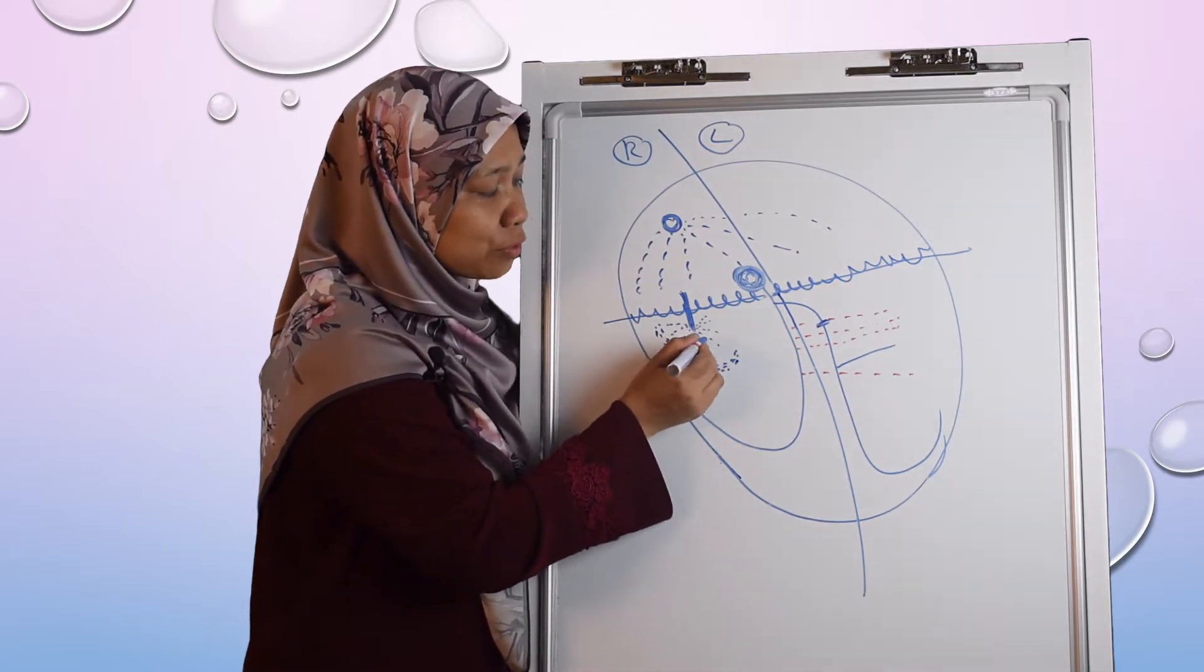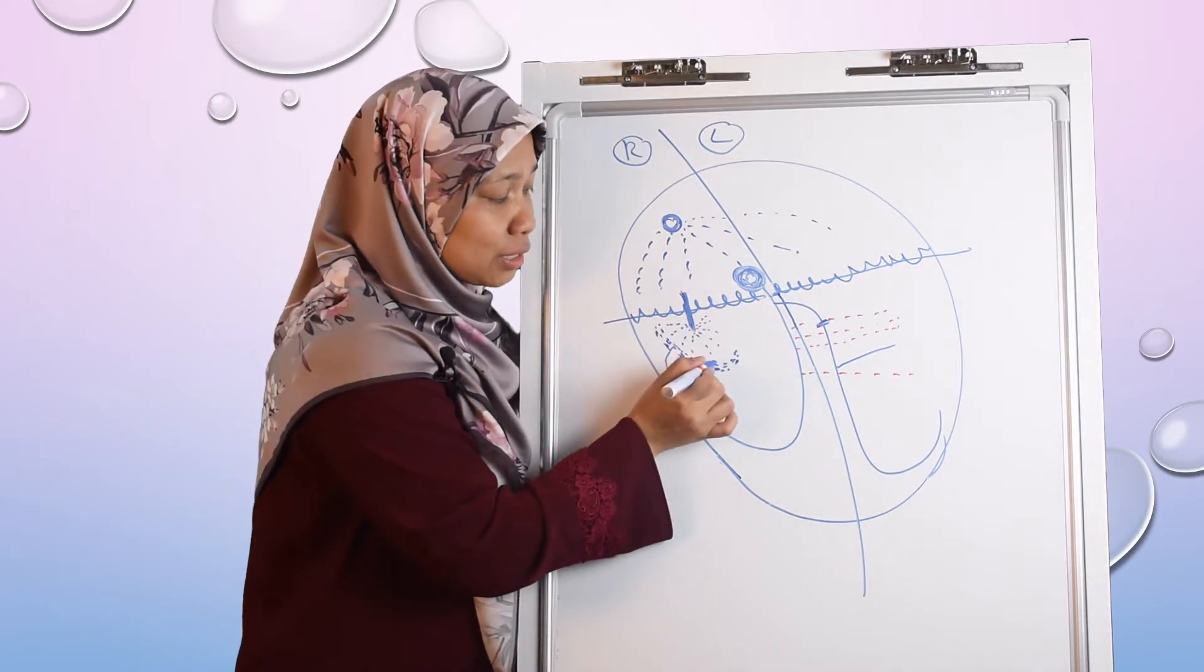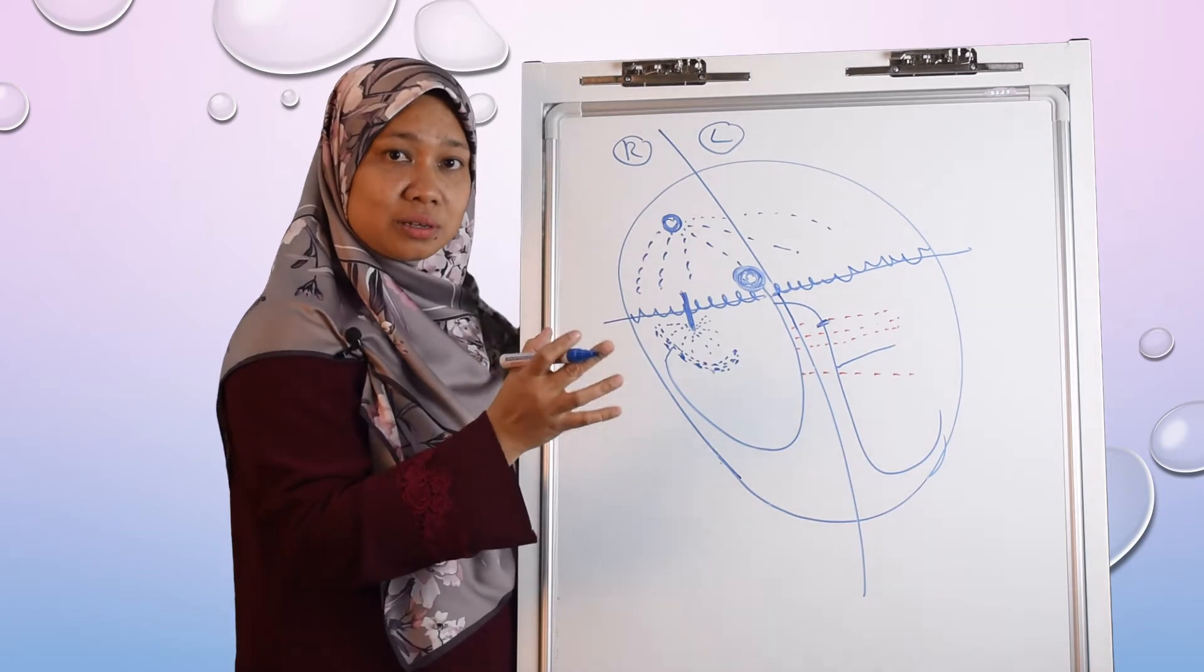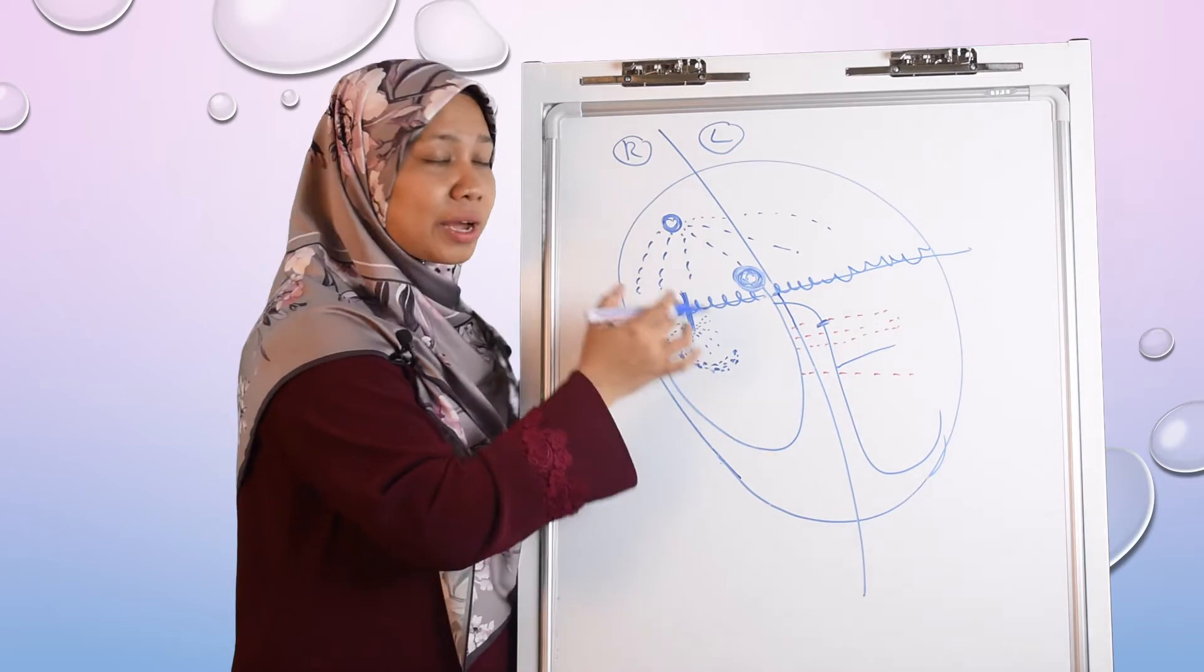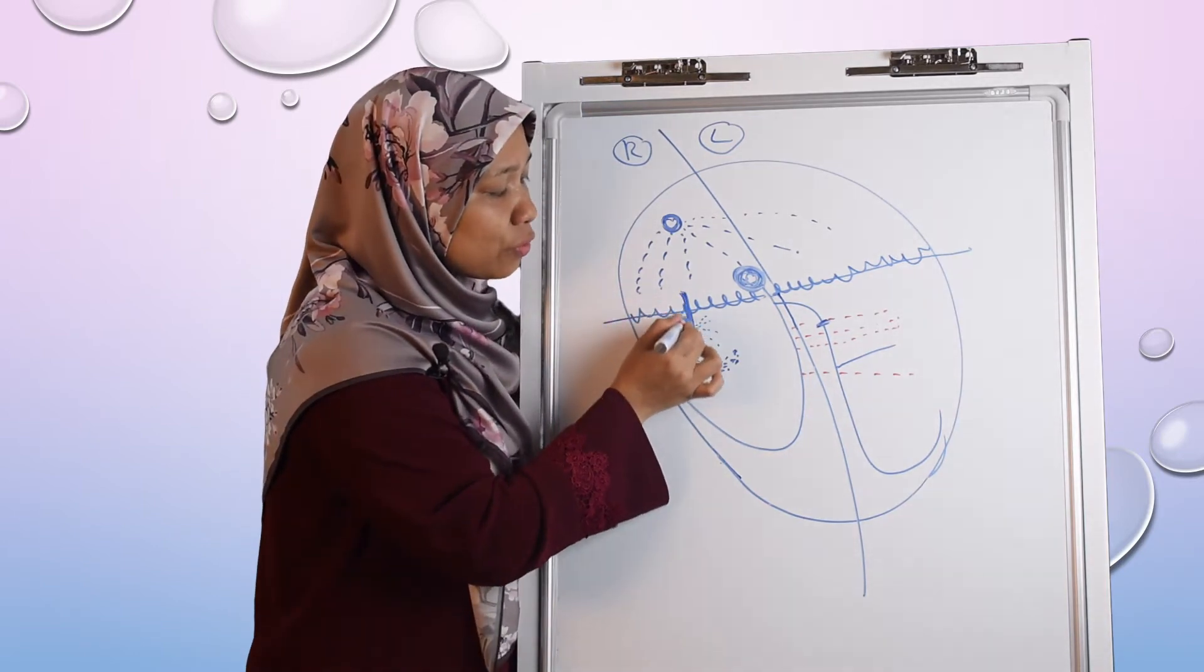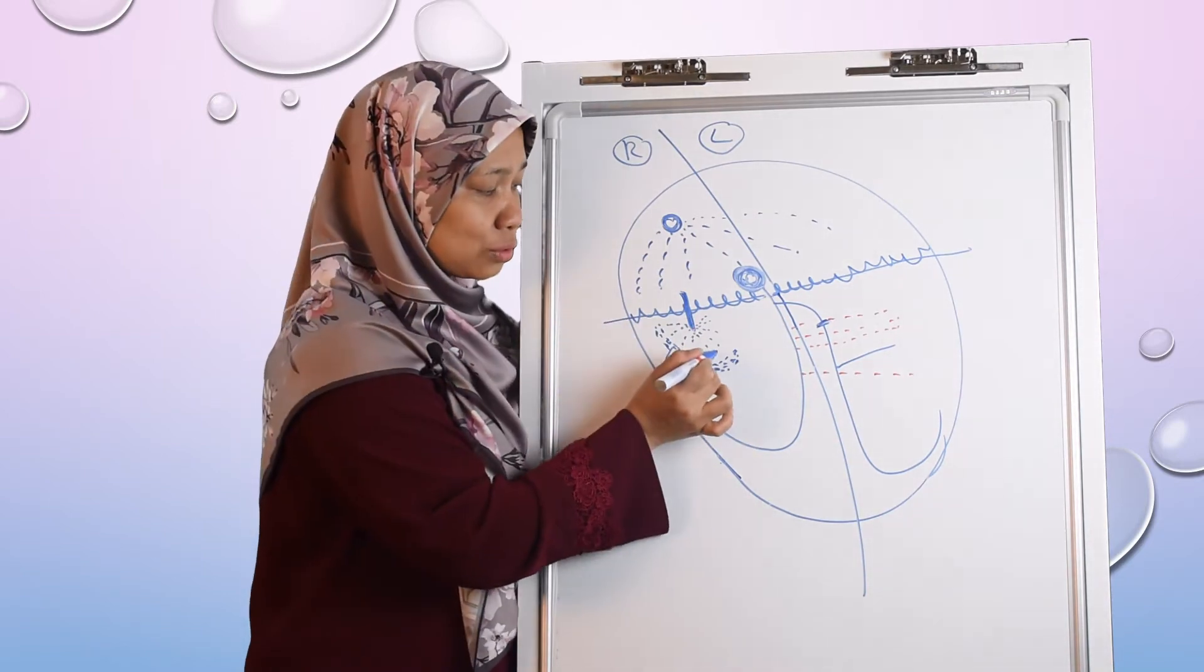the impulse from the accessory pathway cannot propagate because the area here will go through absolute refractory period, meaning that the cardiac muscles there are already stunned and cannot be stimulated by any impulse. So the impulse from the accessory pathway will be terminated. So it will stop here.